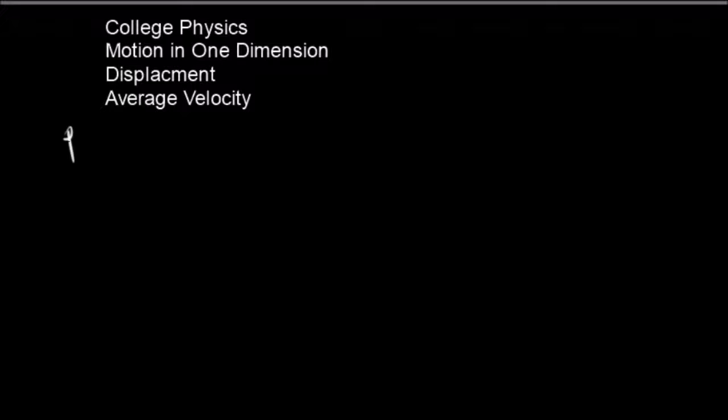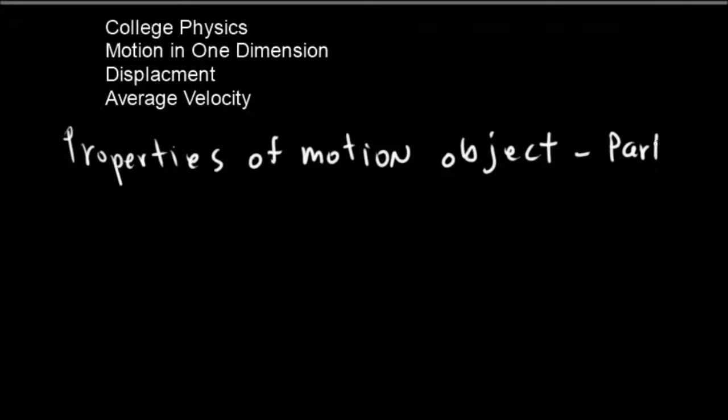These are the properties that describe the motion of an object. In this case we're going to make things a little simpler and just talk about a particle. A particle is kind of a theoretical thing, it's just a small little point-like charge, but it's a good way to start.